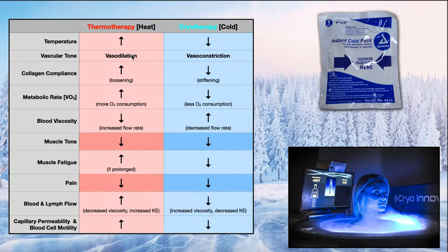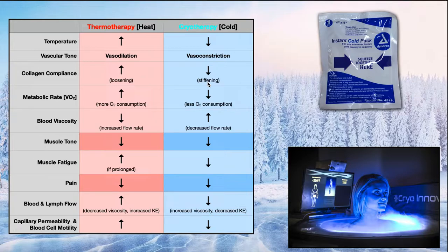In heat therapy we get vasodilation. A lot of tissue also has a protein called collagen, which provides tensile strength. Cryotherapy actually decreases the compliance of collagen — compliance being the ability to stretch. By decreasing collagen compliance, it results in stiffening. When we talked about thermotherapy, that is used to loosen soft tissues, whereas cryotherapy actually results in them stiffening up a little bit.